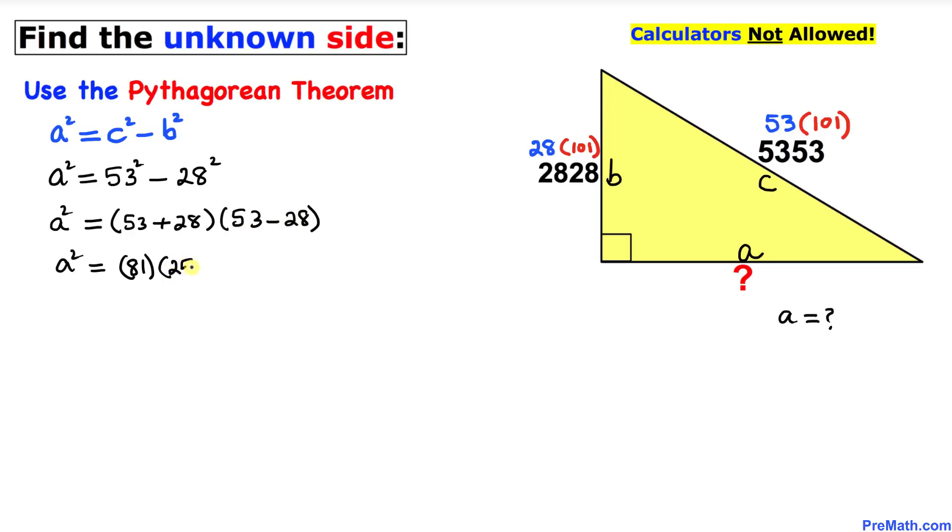Now let's go ahead and take the square root on both sides, on this side and this side as well. So a turns out to be the square root of 81, and then I can write the square root of 25. I just split them up.